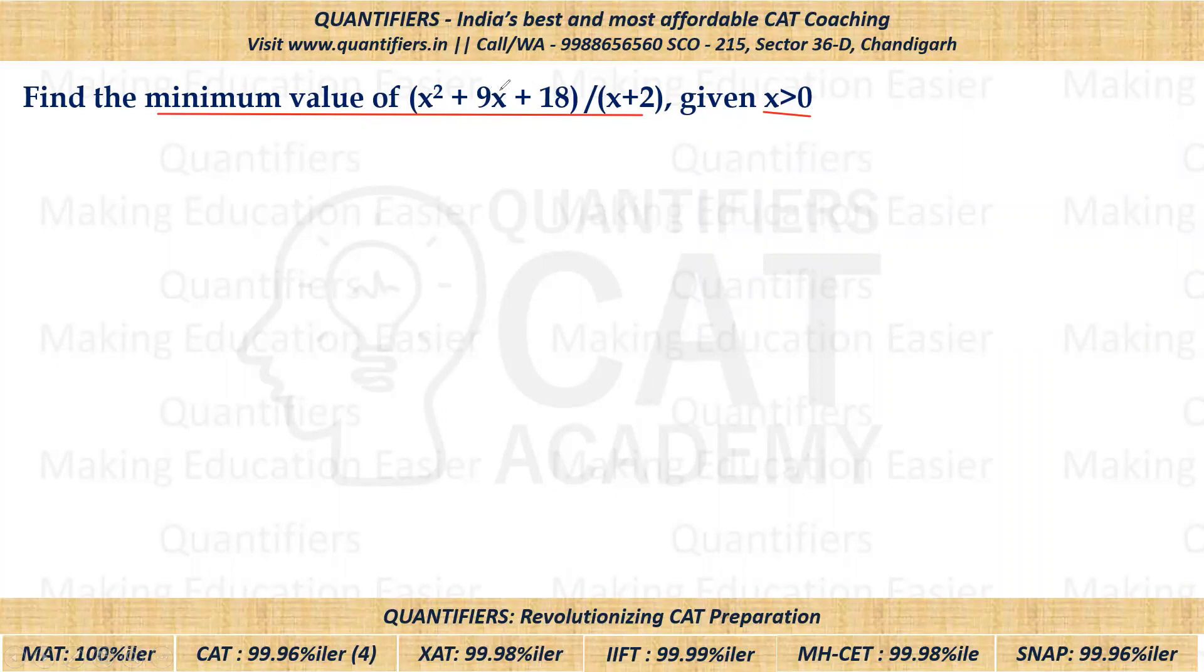Just look at the numerator. This numerator is a quadratic equation and I hope you can easily figure out that it can be factorized because what is 18? 18 is 6 into 3, and 9 is 6 plus 3. So here we can see that we can factorize which can be written as (x+3) into (x+6), and denominator is (x+2).